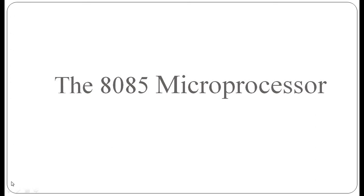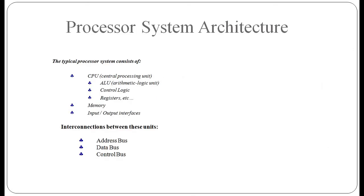Hello everyone, today we will discuss the 8085 microprocessor. A typical processor system consists of a CPU (central processing unit), ALU (arithmetic logic unit), control logic, different registers, memory, and input/output interfaces. The interconnections between all these units are done with the help of the address bus, data bus, and control bus.